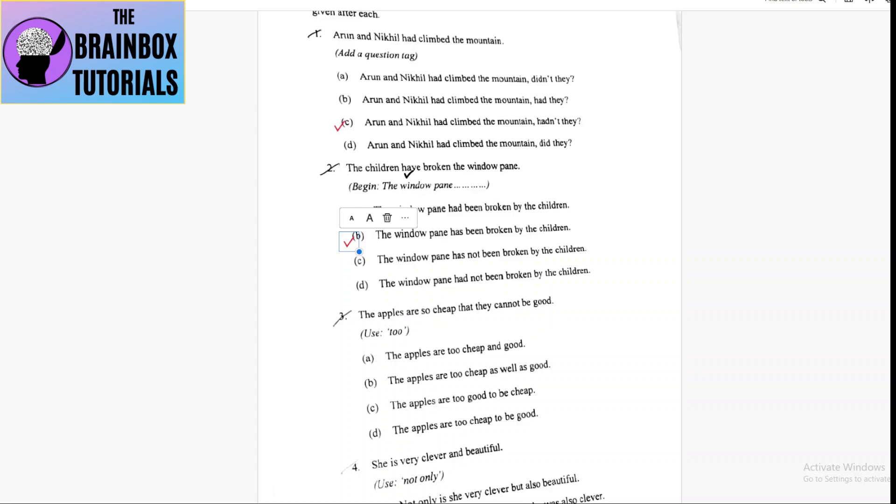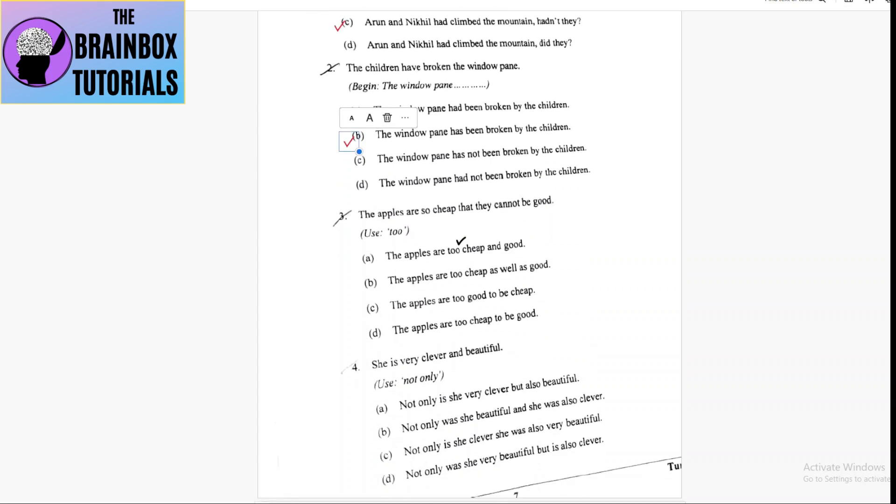Coming to number three: the apples are so cheap that they cannot be good. Use 'too', for that option D will be the correct option: the apples are too cheap to be good.